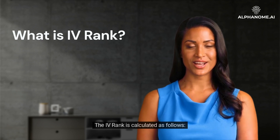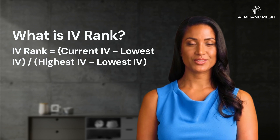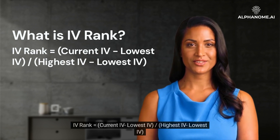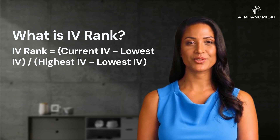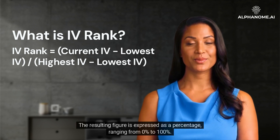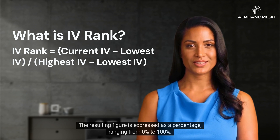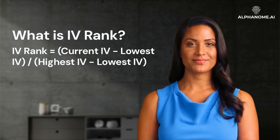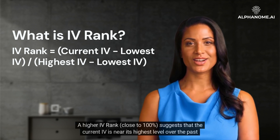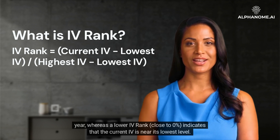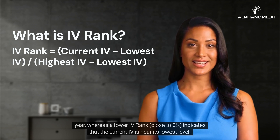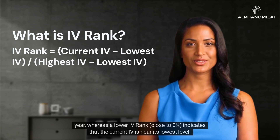The IV rank is calculated as follows: IV rank equals current IV minus lowest IV, divided by highest IV minus lowest IV. The resulting figure is expressed as a percentage, ranging from 0% to 100%. A higher IV rank, close to 100%, suggests that the current IV is near its highest level over the past year, whereas a lower IV rank, close to 0%, indicates that the current IV is near its lowest level.